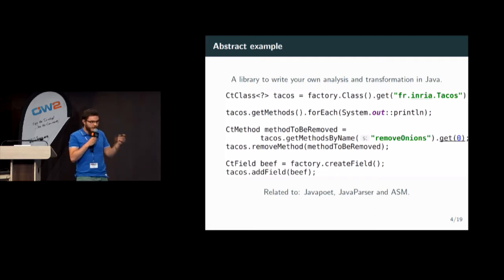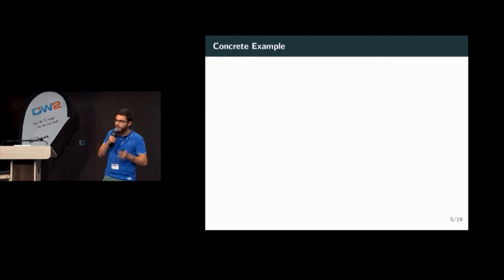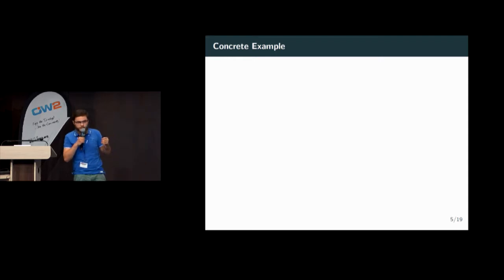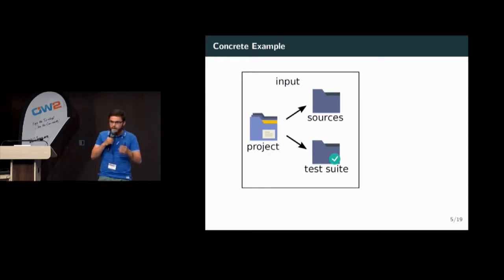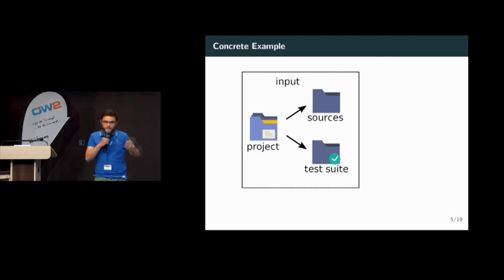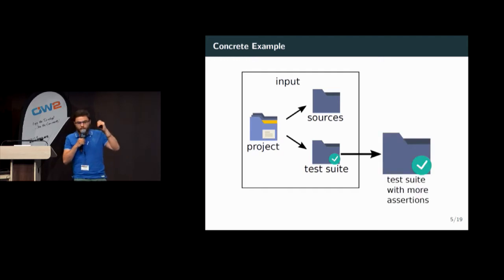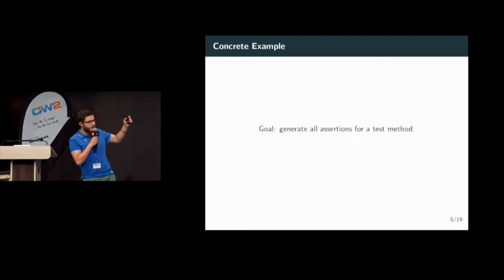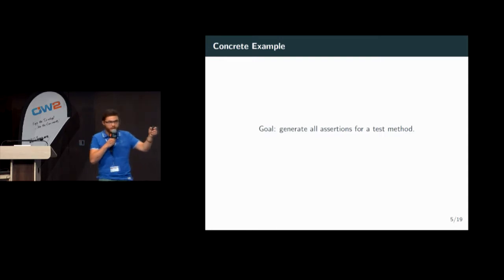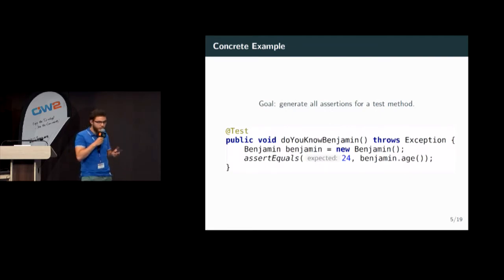Now I will illustrate with a concrete example. I have a project with sources and a test suite, and I want to improve the test suite by generating more assertions in a test, as I explained at the beginning. My goal is to generate all assertions for a test method. I will take the example test method doYouKnowBenjamin. It's very simple — there is a local variable Benjamin, which is me, and one assertion on my age: I am 24.